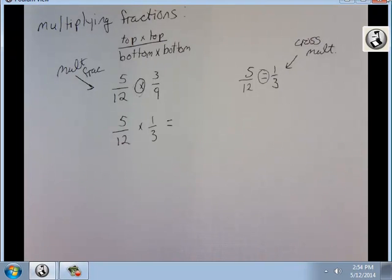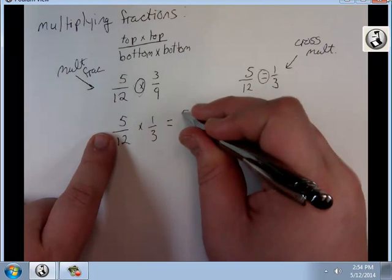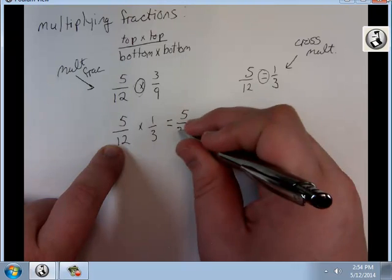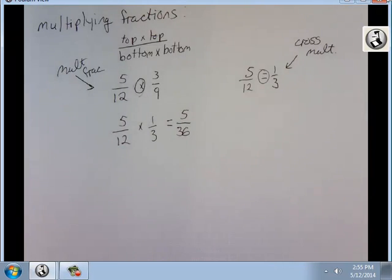For now, we're just going to worry about multiplying fractions. Like I said, top times top, bottom times bottom. 5 times 1 is 5. 12 times 3 is 36. I ask myself those same two questions. Reduced? Yes. Proper? Yes. So then I'm done.